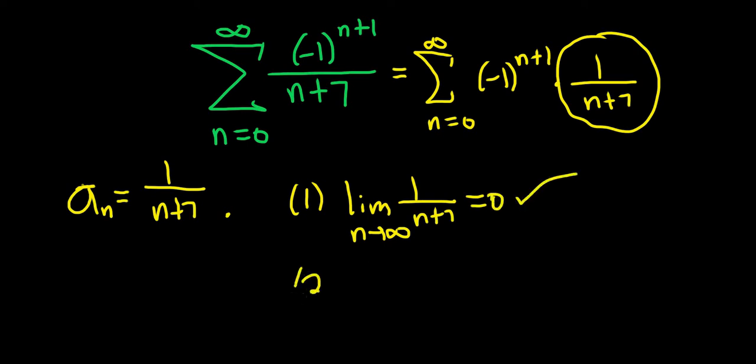The second step is to verify that a sub n is what's called non-increasing. In other words, it's decreasing or staying the same. If you set a sub n equal to 1 over n plus 7, you'll see that as n gets big, the fraction gets smaller and smaller. It's not getting bigger and smaller, but just only getting smaller. So you can say it is non-increasing.